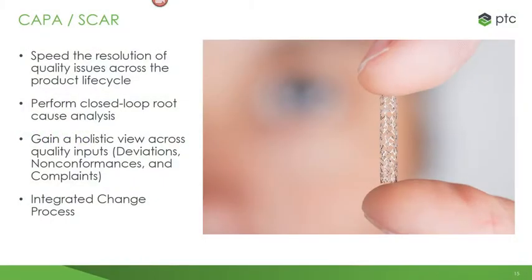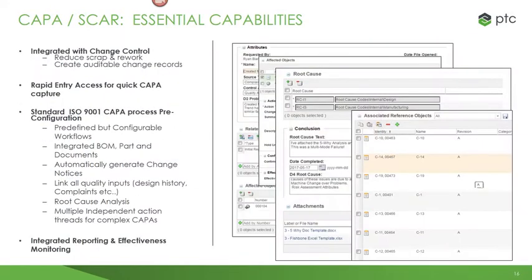CAPA: implementation of a standard closed-loop corrective action preventive action process. Corrective actions are typically reactive measures, including root cause analysis. Preventive actions are typically proactive measures. The CAPA solution will help speed the resolution of quality issues across the product lifecycle, perform closed-loop root cause analysis, and gain a holistic view across quality inputs — deviations, non-conformances, and complaints — fully integrated with the change process. Essential capabilities include integration with change control, rapid entry for CAPA capture, pre-configured ISO 9001 CAPA workflows, automatic generation of change notices, root cause analysis, and integrated reporting.